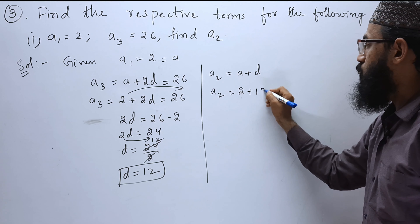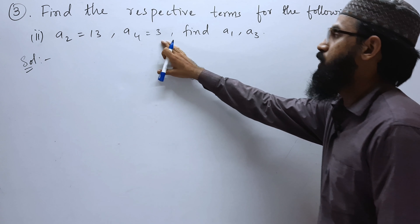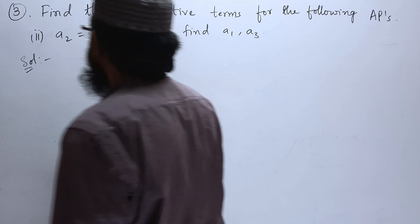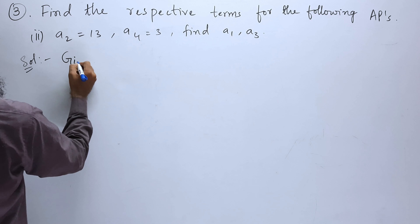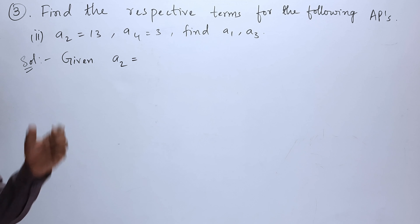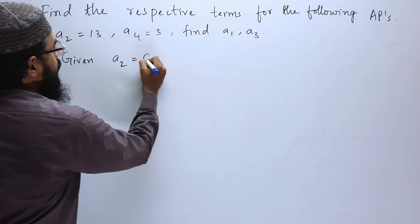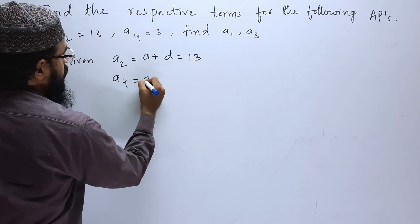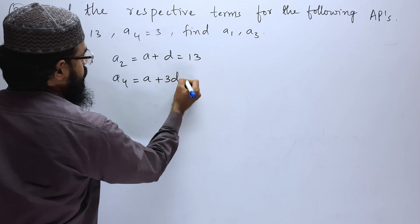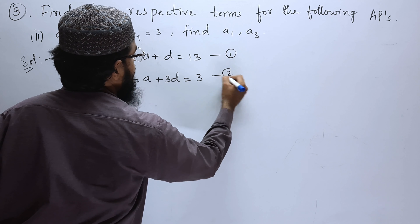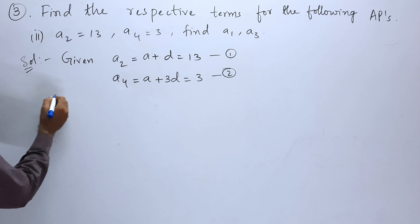Second bit: A2 equals 13 and A4 equals 3. We have to find the first term and third term. Given: A2 can be written as A plus D equals 13, and A4 is A plus 3D equals 3. This is the first equation and second equation.